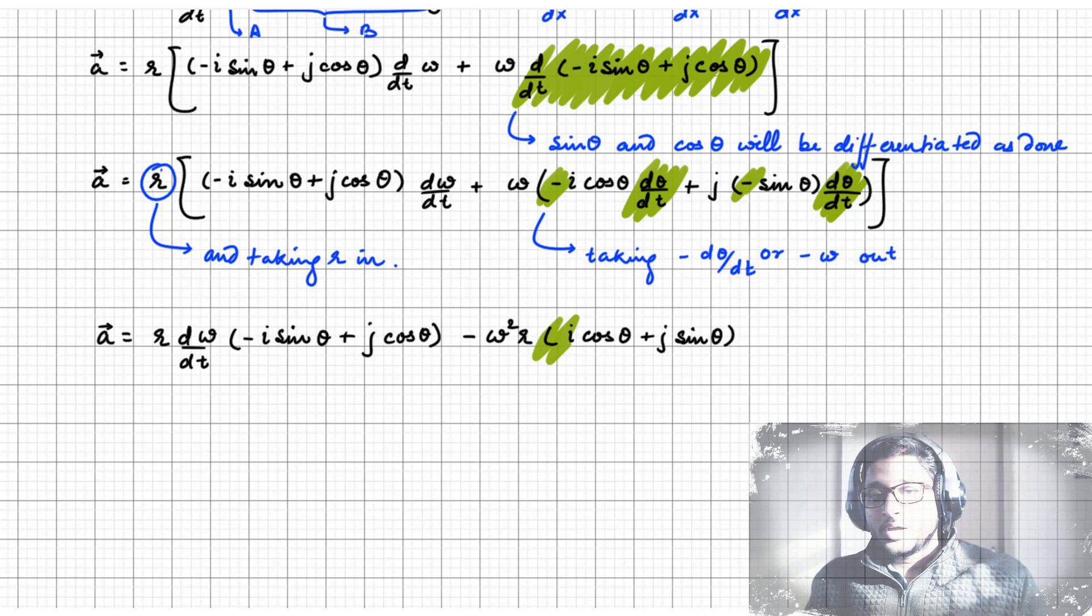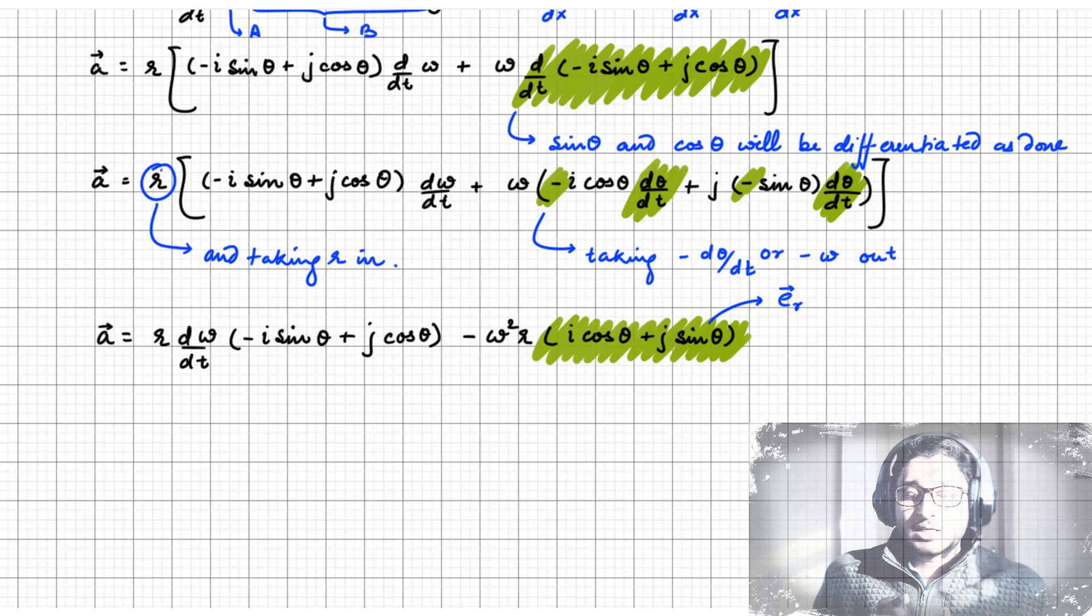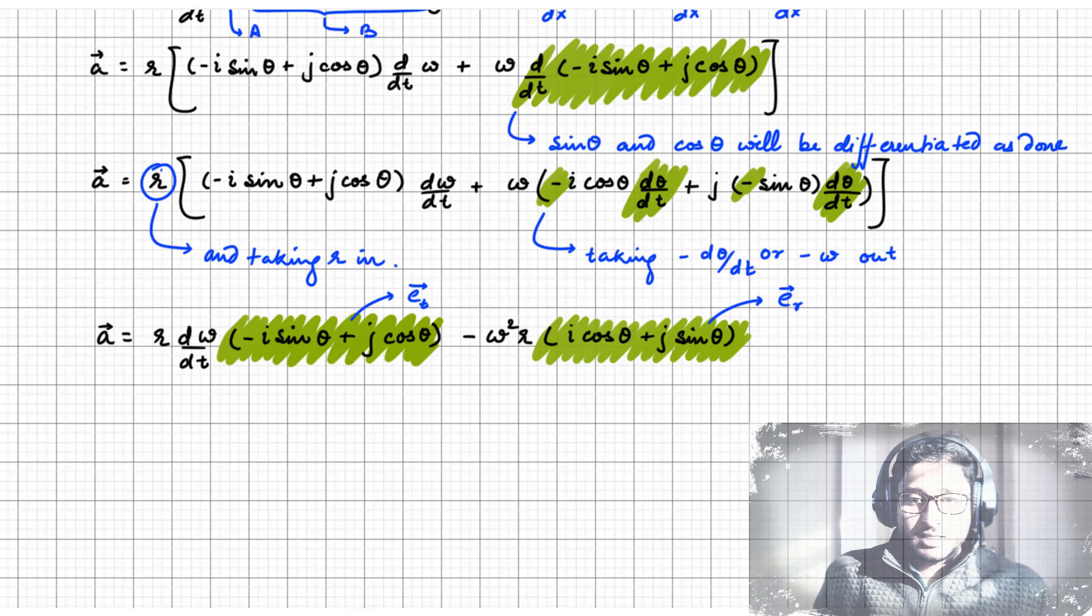Now after differentiation, we can replace i cos theta plus j sin theta with e_r, the radial unit vector, and minus i sin theta plus j cos theta with e_t, the tangential unit vector. And here we have two different parts of acceleration.